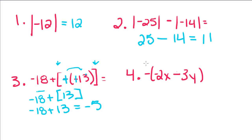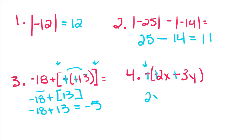This negative out front tells me that I want the opposite value of each term. So this is going to be positive, and this is going to be positive. So then I'm going to get 2x plus 3y.